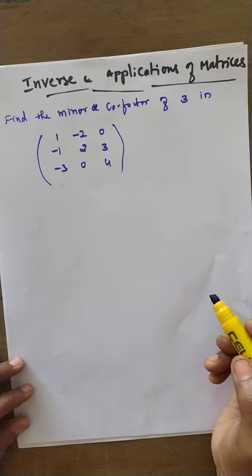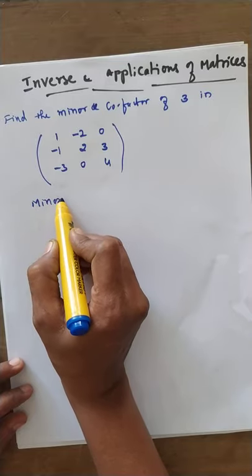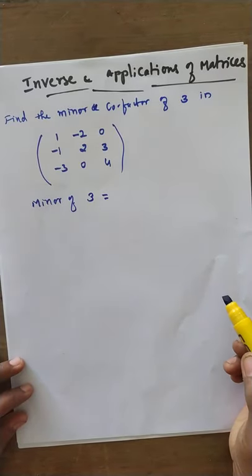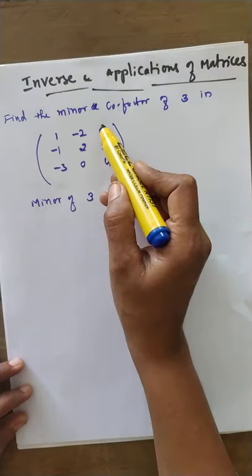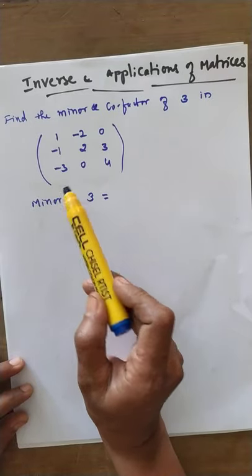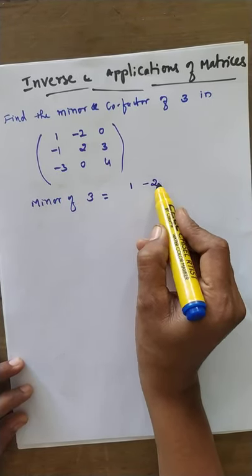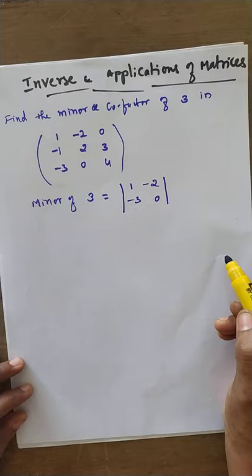So first let's find the minor of 3. Minor of 3 is the determinant value of the matrix obtained by removing the row and column containing 3. After deleting that row and column, we get the matrix [1, -2; -3, 0].